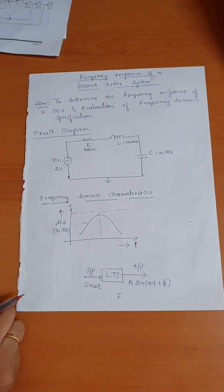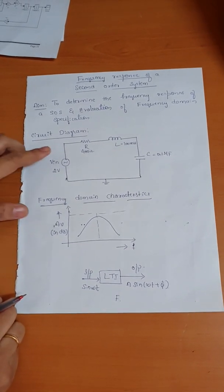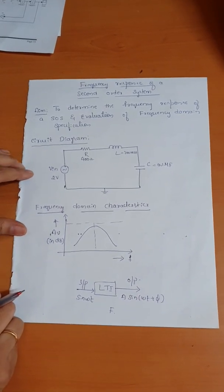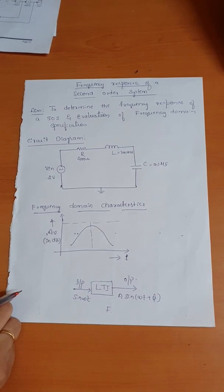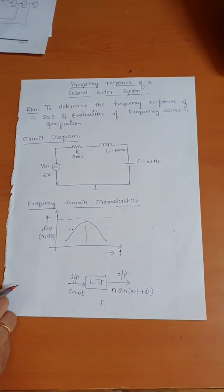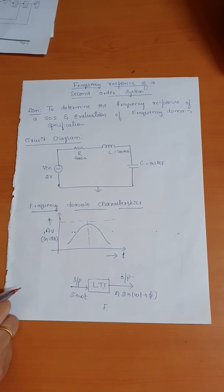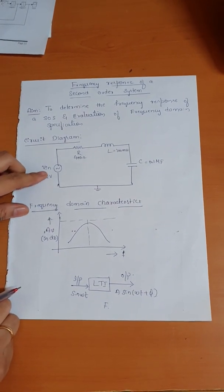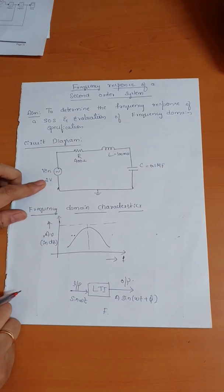Now, this is the circuit diagram for conducting the frequency response experiment. Here we have considered a series RLC circuit. We are going to keep on varying the frequency while keeping all the parameters constant. The input supply is 2 volts peak-to-peak, taken from the signal generator.